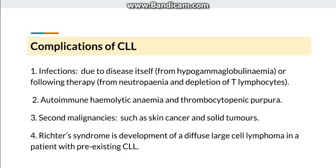Complications of CLL include: first, infections — because B-cells are immunologically incompetent, there is hypogammaglobulinemia, and following therapy there is neutropenia and depletion of T-lymphocytes. Second, anemia — which can be autoimmune hemolytic anemia — and thrombocytopenia. Third, second malignancies after treatment such as skin cancer and other solid tumors. Lastly, Richter syndrome — the development of diffuse large cell lymphoma in a patient with pre-existing CLL — which carries a very poor prognosis.